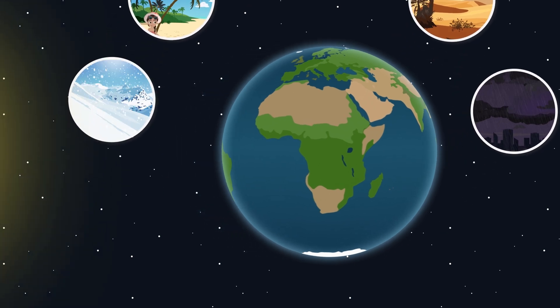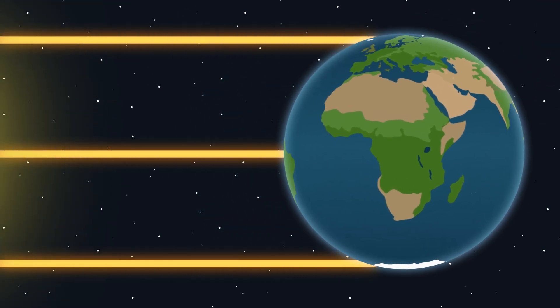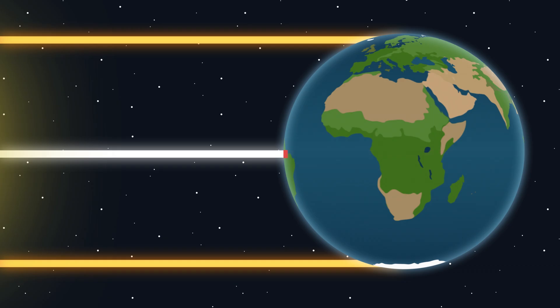Most importantly, it's the sunbeams as they hit the surface of the earth. A beam of sunlight reaching the earth close to the equator hits a small area, where it gets hot. Here, close to the poles, each beam of sunlight is spread out over a much larger area, which is not heated as much.